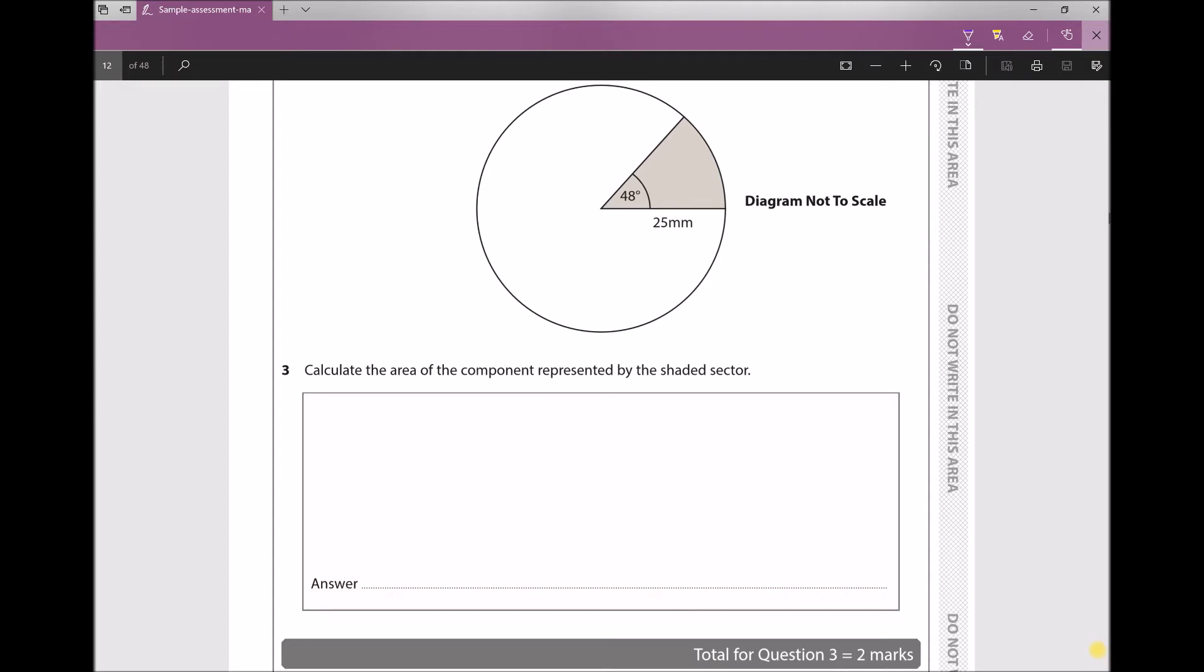We know that there's 360 degrees in a circle and we're only occupying 48 degrees of that 360 degrees. So as a fraction, the proportion of that circle that's shaded is just 48 over 360. Well, 48 divided by 360 as a decimal is 0.133 recurring.